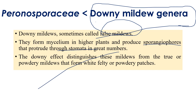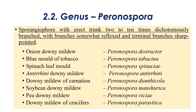The white downy growth on the lower surface consists of erect sporangiophores that came out from the stomata. Downy mildew is distinguished from powdery mildew — in powdery mildew, powdery growth appears, while in downy mildew, downy growth appears. This is the major difference. The first genus is Peronospora, characterized by dichotomously branched sporangiophores with reflexive branches.